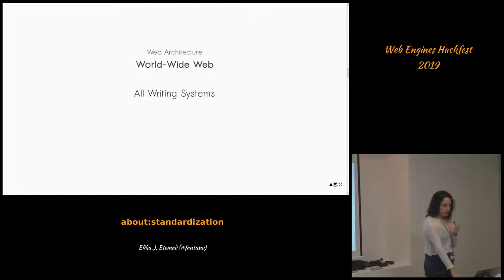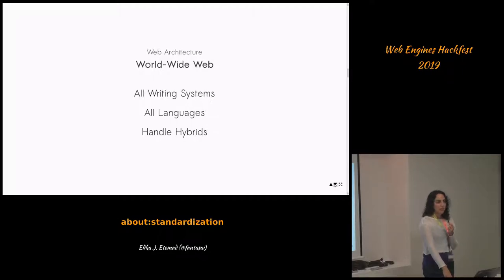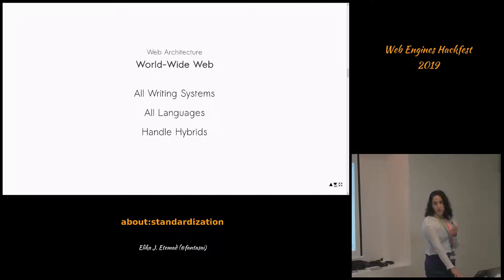The web is worldwide, so all writing systems and languages need to work. If you look at software in the 90s, people deployed entirely different software packages for each region — the compiled binary would be different; you'd only have bidirectional text support in the version shipped to the Middle East, and only CJK support in the version shipped to Japan and China. We now have a platform that can handle almost any writing system, which is amazing.